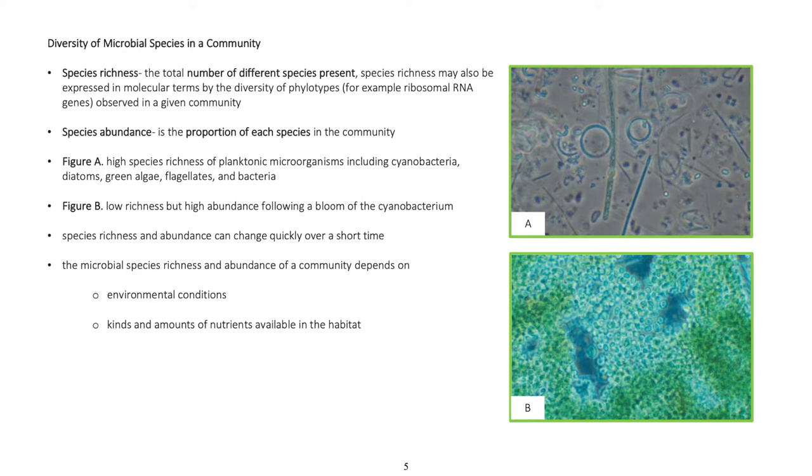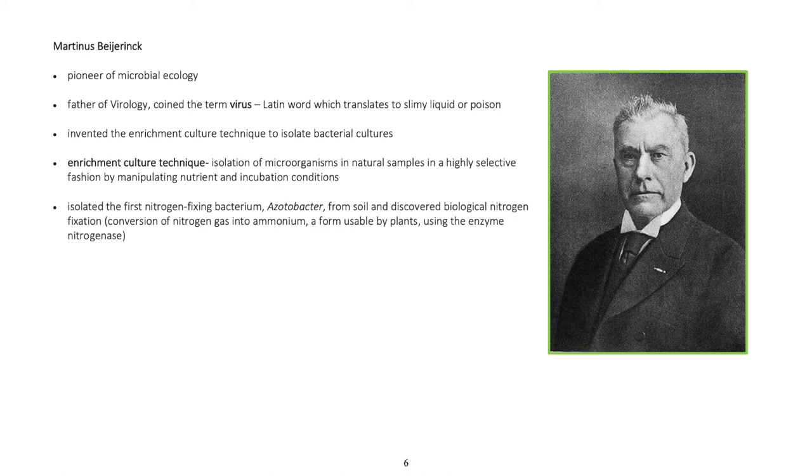Species abundance is the proportion of each species in the community. Figure A shows high species richness of planktonic microorganisms including cyanobacteria, diatoms, green algae, flagellates, and bacteria. Figure B shows low richness but high abundance following the bloom of the cyanobacterium. Species richness and abundance can change quickly over a short time. The microbial species richness and abundance of a community depends on environmental conditions, kinds and amounts of nutrients available in the habitat.